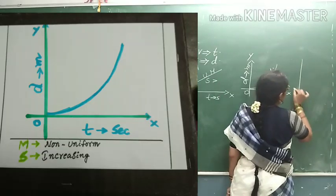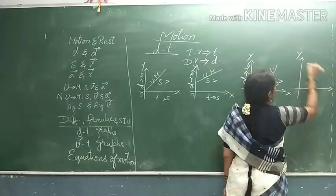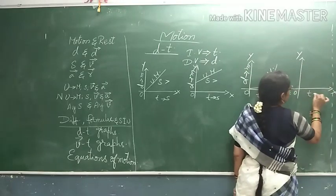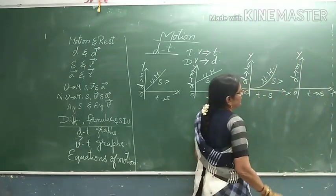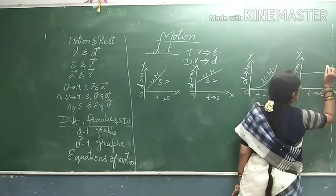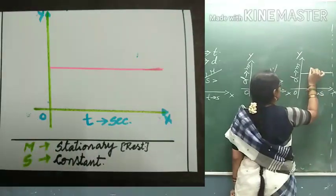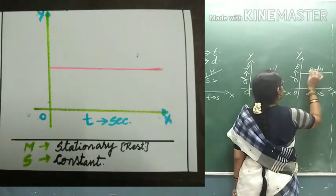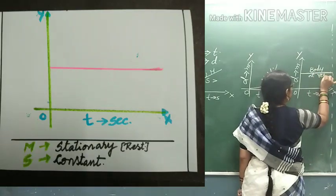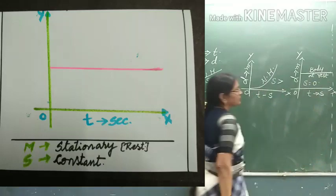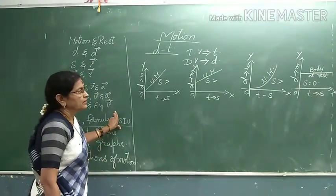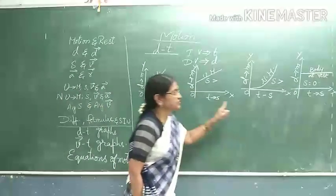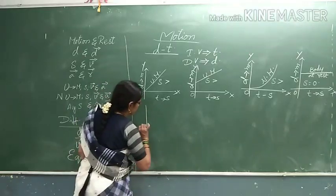Next graph — when you observe this graph, time on x-axis and distance on y-axis. Here the graph is parallel to the x-axis. Then the body is at rest. Speed is equals to zero. The body is at rest, speed is equals to zero. So already we discussed: speed may be zero or increasing, but never be negative.